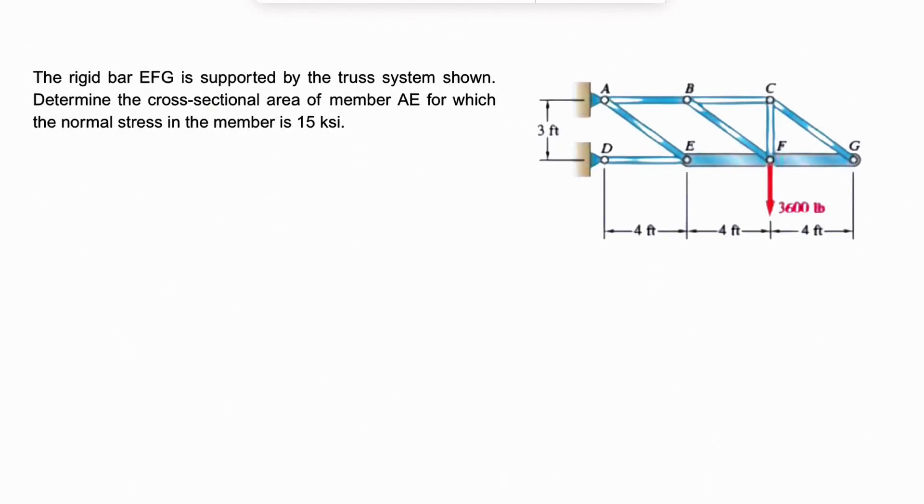Alright guys, welcome back. We have another question from the first chapter of the Injury Mechanics by Beren Johnson. We have this rigid bar EFG that is supported by the truss system, as we can see on the right-hand side, and we need to determine the cross-sectional area of the member AE for which the normal stress in the member is 15 KSI.